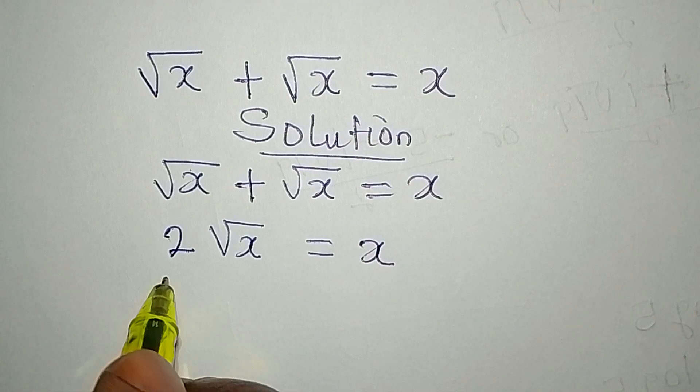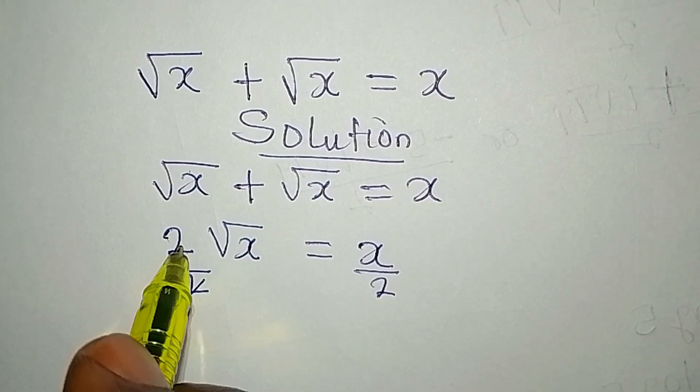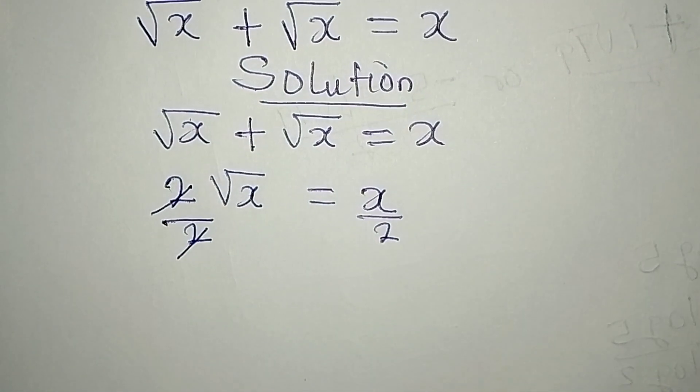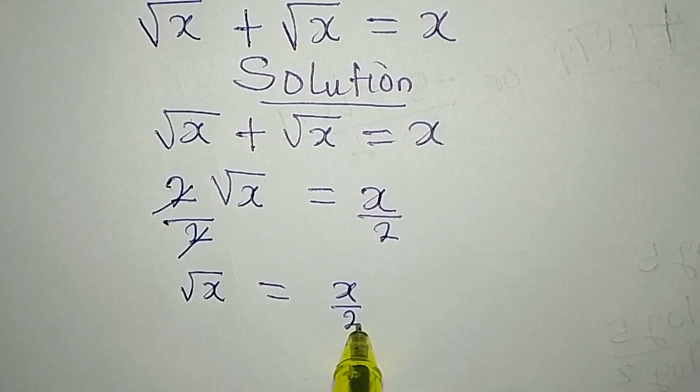Now divide this by 2 and divide by 2 so that this can be gone. Now we have square root of x equal to x over 2.